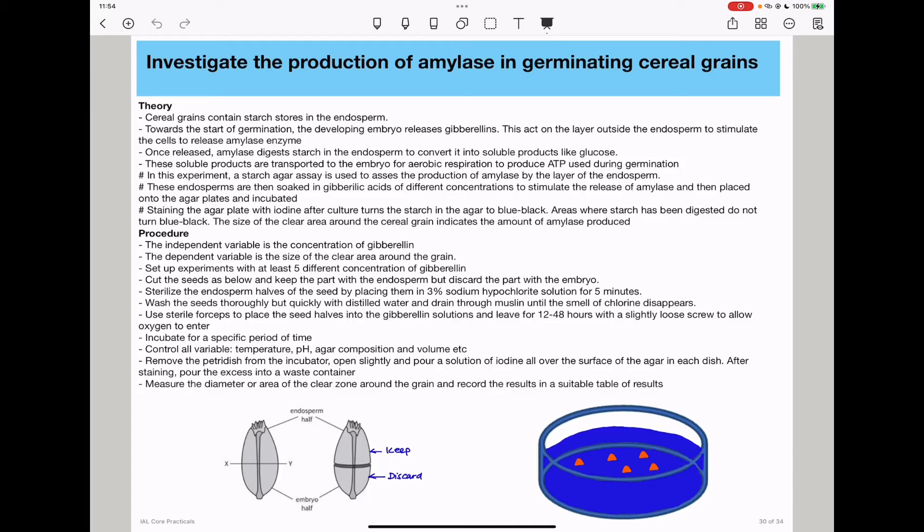The procedure is as follows. The independent variable is the concentration of gibberellin, which you will vary. The dependent variable is the size of the clear area around the grain, which is the result you must measure.